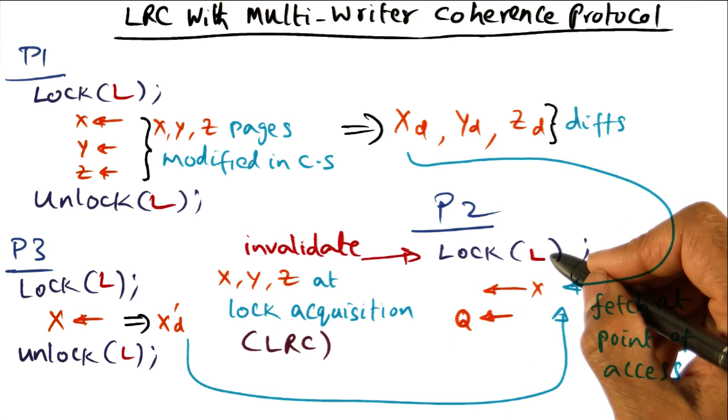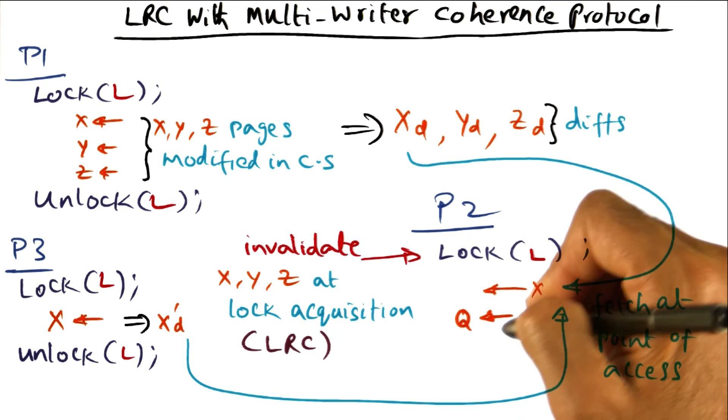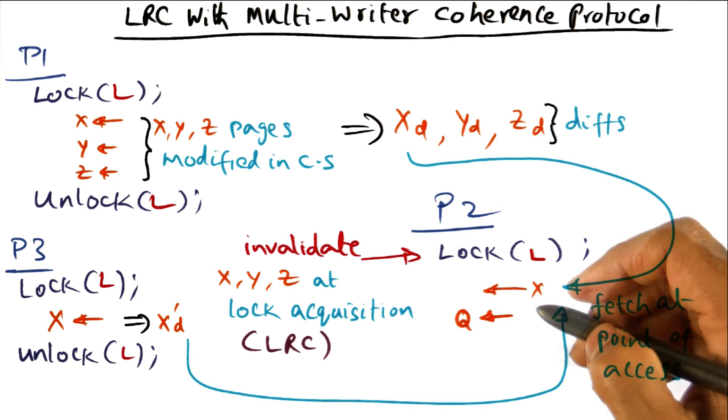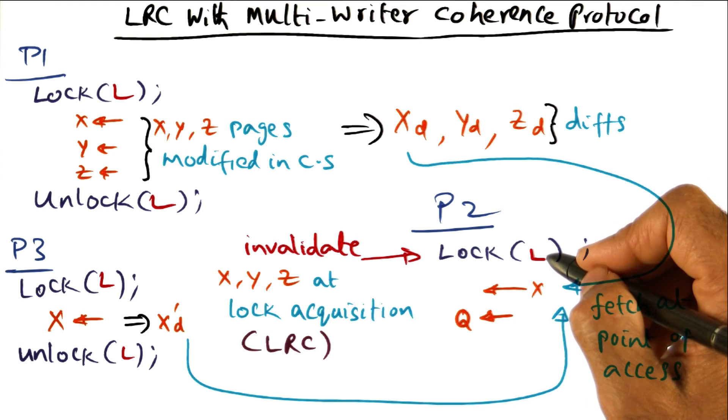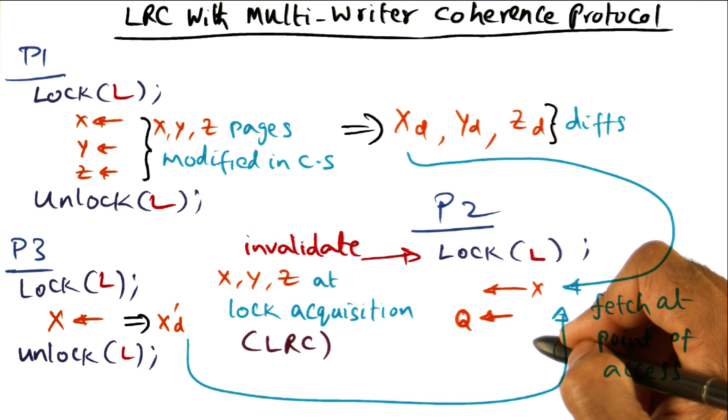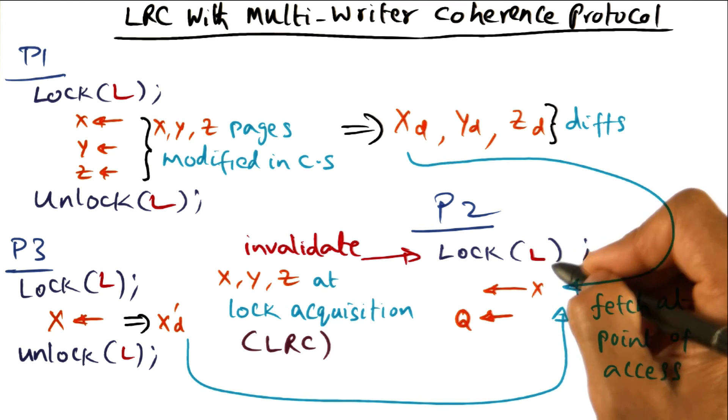So future lock requests for L will result in invalidating x, y, z and Q because all of those may have been modified and the next critical section that wants to access this lock L has to get the current versions of all the pages that were ever associated with L.